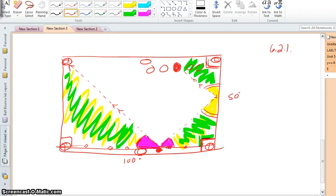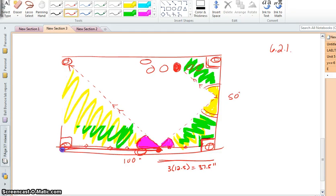So this distance here is exactly three triangles long. So three times 12.5, we've got a 37.5 inch distance here.